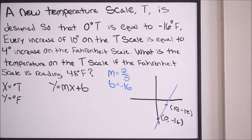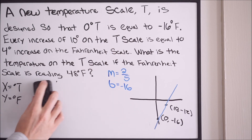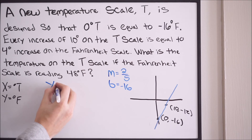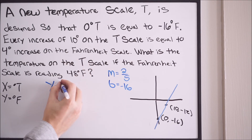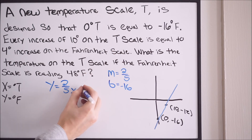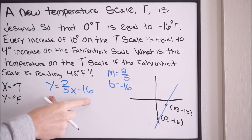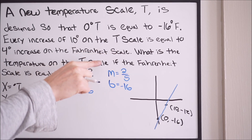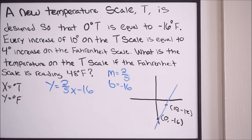We can now write our final equation in slope-intercept form: y equals (2/5)x plus negative 16, or y equals (2/5)x minus 16. This is the equation we'll use to answer the question: what is the temperature on the T scale if the Fahrenheit scale reads 48 degrees?